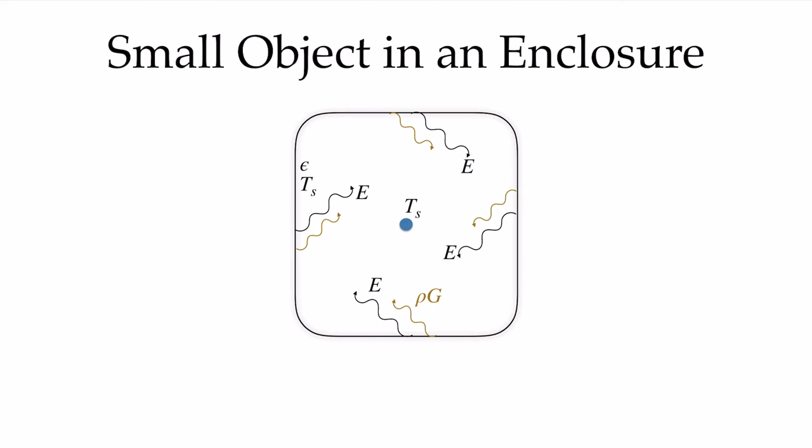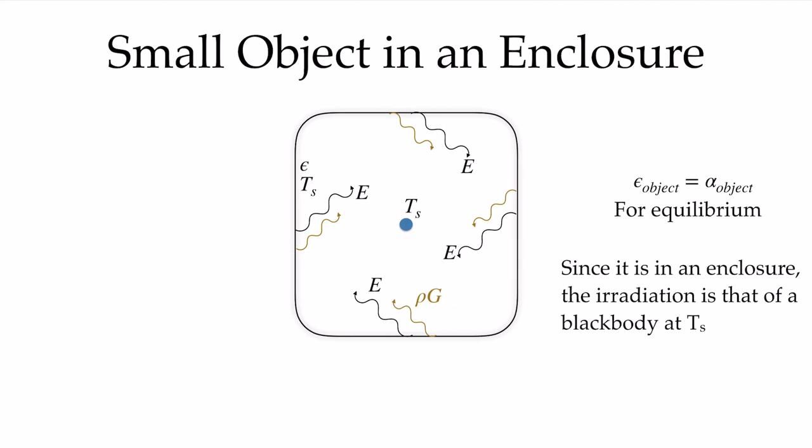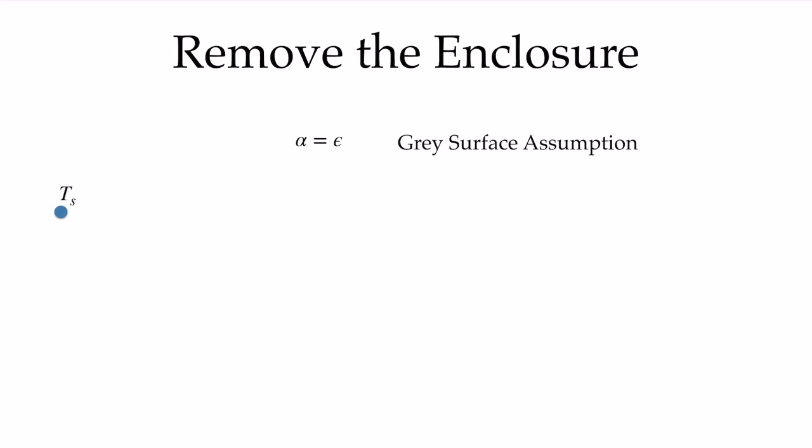If we have a small object in an enclosure, that object — in order to be in equilibrium — must take in exactly as much energy as it gives off, otherwise it would not be in equilibrium. Since it's a small object in this enclosure, it will be at the same temperature as the enclosure itself. This tells us that the emissivity of the object equals the absorptivity for that object; if it weren't, it would not be in equilibrium. Since it is an enclosure, the irradiation is that of a black body at T_s. The assumption that the total hemispherical absorptivity equals the total hemispherical emissivity is the gray surface assumption — very useful for engineering calculations.